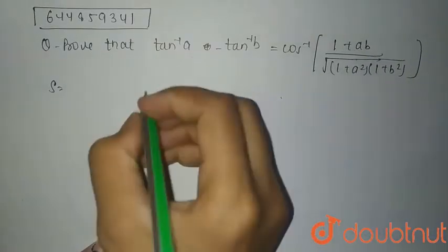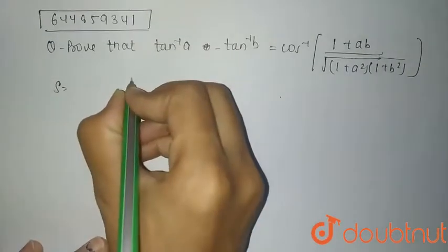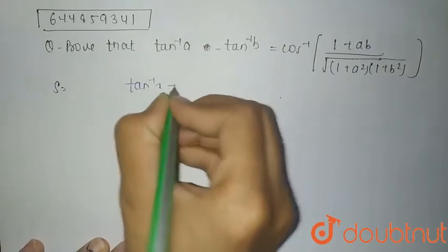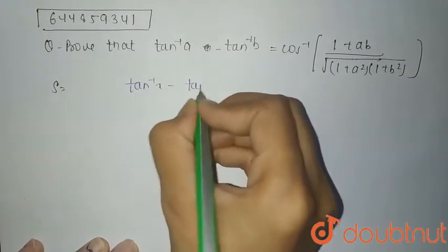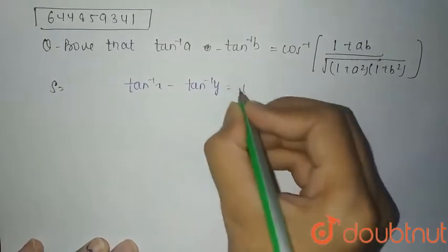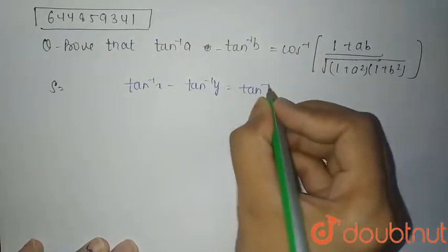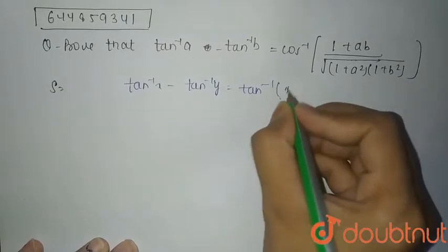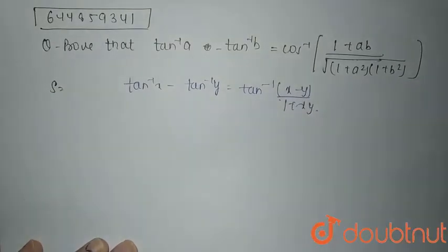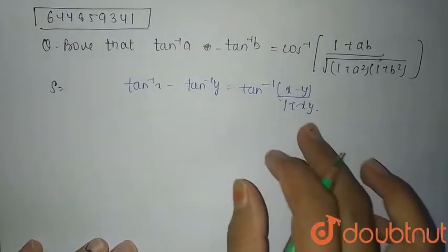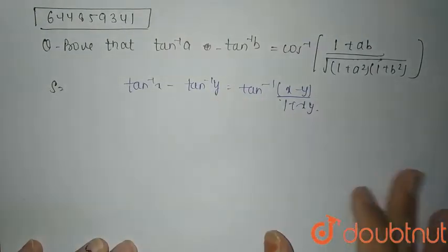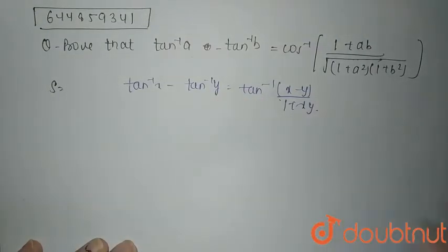First of all, recall the identity of tan inverse x minus tan inverse y, which is nothing but tan inverse of x minus y divided by 1 plus x into y. This is the identity we will use.